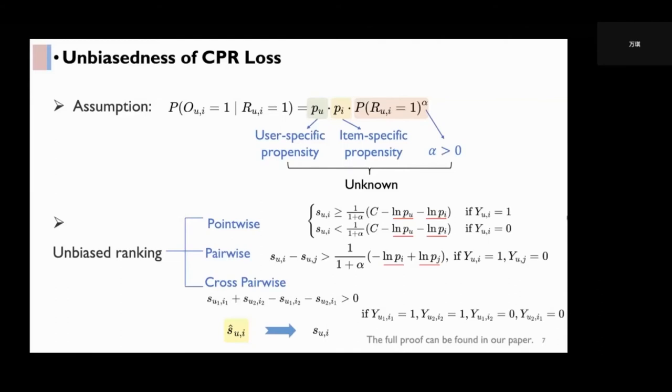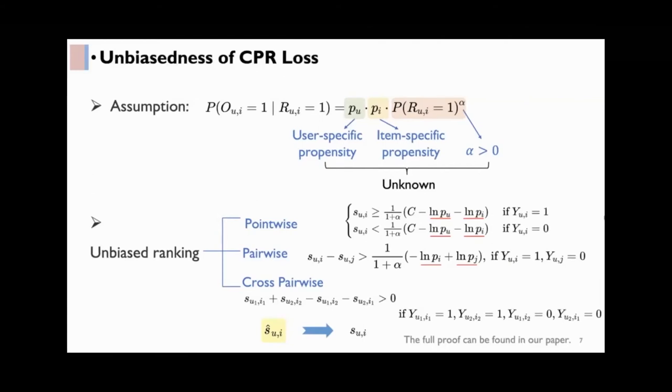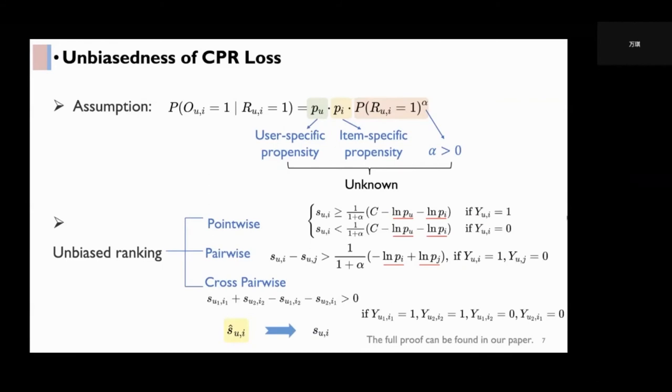With this assumption, we can prove that the unbiased ranking can be written in the following three forms. For the pointwise and the pairwise forms, the unknown propensities exist in the inequalities for the unbiased ranking. But commonly used pointwise and pairwise losses just ignore them, which results in the popularity bias.